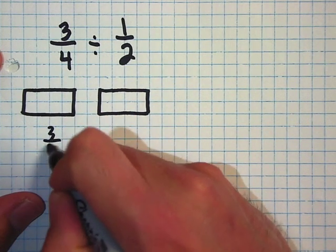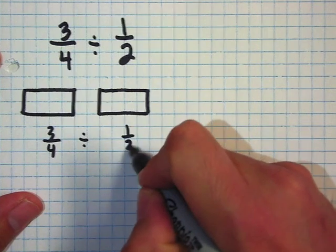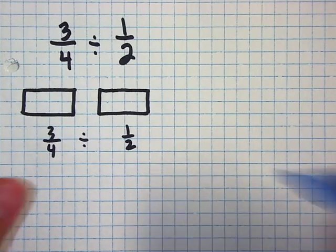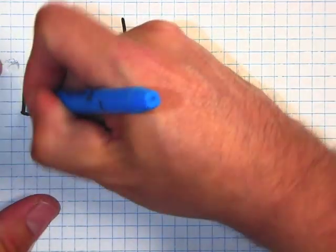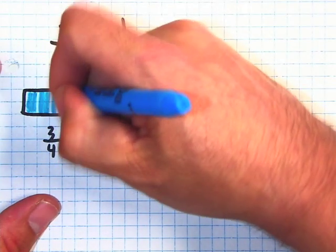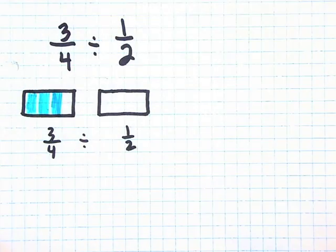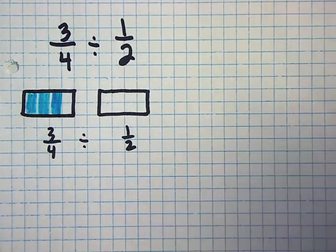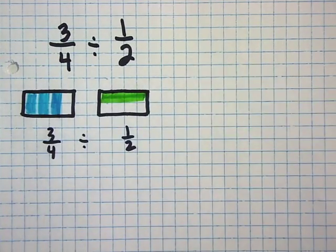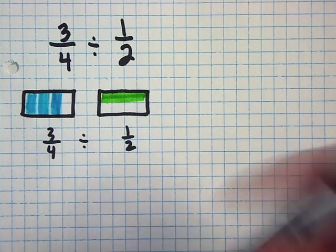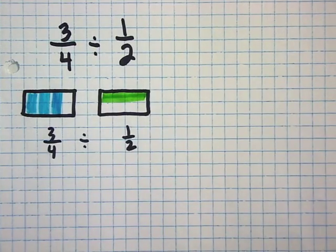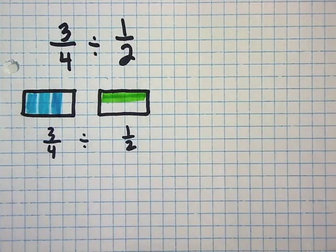So three-fourths divided by one-half. Now go ahead and take care of the shading. Shade in three-fourths and shade in the one-half. Okay, now look at one-half. That's your divisor. How many parts make up one-half? It's a grand total of four.